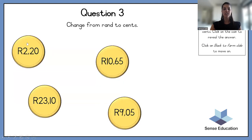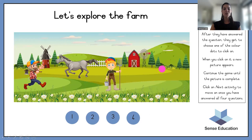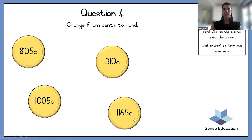Change from rand to cents — again, the comma moves two spaces to the right. So 2 rand 20 equals 220 cents. 10 rand 65 is 1,065 cents — sure, big numbers here. And 23 rand 10 cents is 2,310 cents. And 9 rand 5 cents is 905 cents. Good job, well done. It's a horse — beautiful. I wonder what the last picture is.